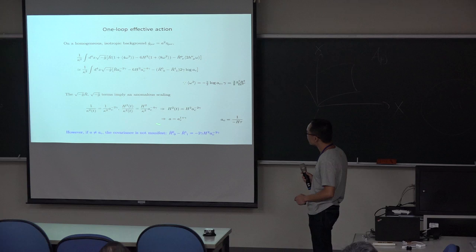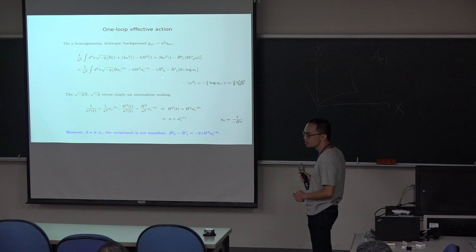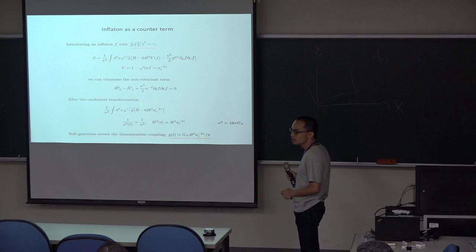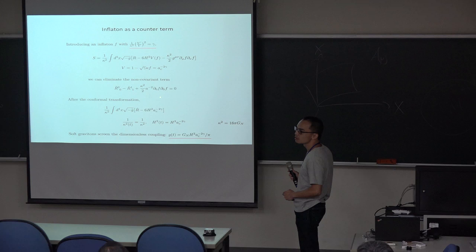However, actually, if the scale factor has anomalous dimension, the third term does not disappear, then the non-covariance remains. That is the problem. So how to avoid this problem? Actually, by introducing the inflaton as a counter-term whose scalar parameter is identified by the anomalous dimension. By introducing this inflaton, we can eliminate the non-covariance. By imposing the covariance, we can naturally introduce the inflaton. That is the merit of our approach.